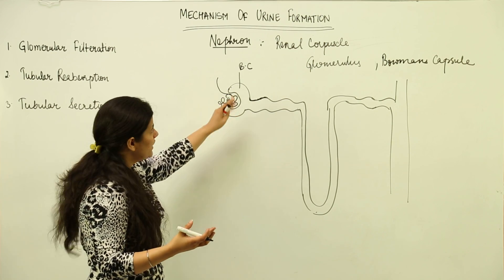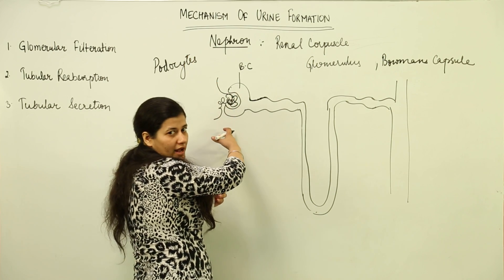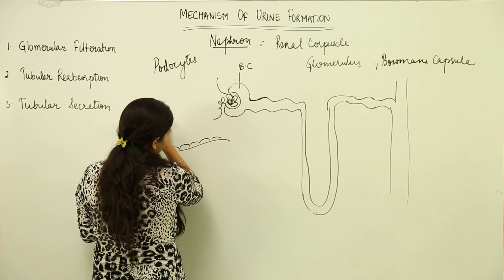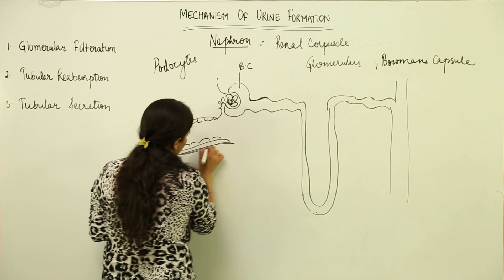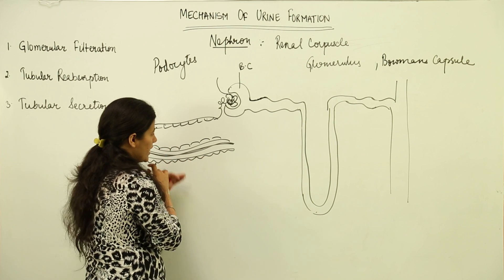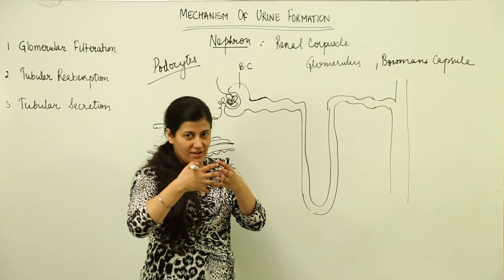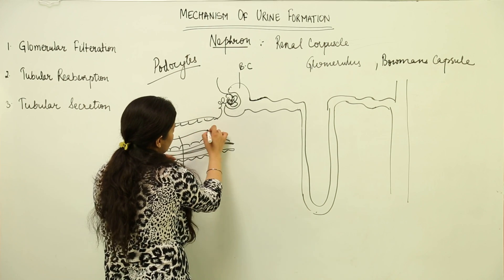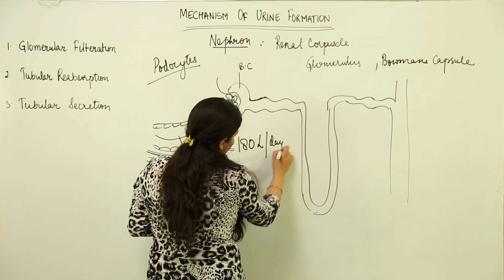In the renal corpuscle we have structures known as podocytes. This is an exchange part, so it has a very thin epithelium of the capillaries in contact with a non-cellular basement membrane, followed by the epithelium of the Bowman's capsule. These capillaries are highly folded and in close contact with the Bowman's capsule, forming filtration slits known as podocytes, through which blood in the capillaries is filtered directly into the Bowman's capsule.